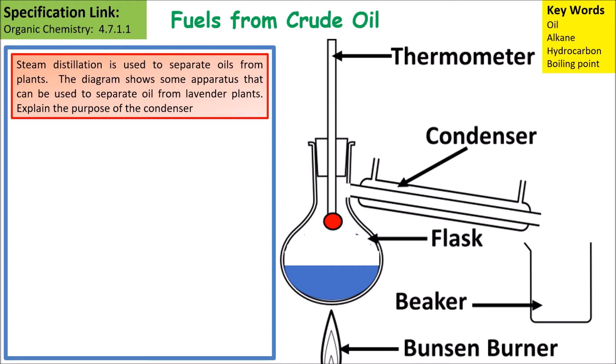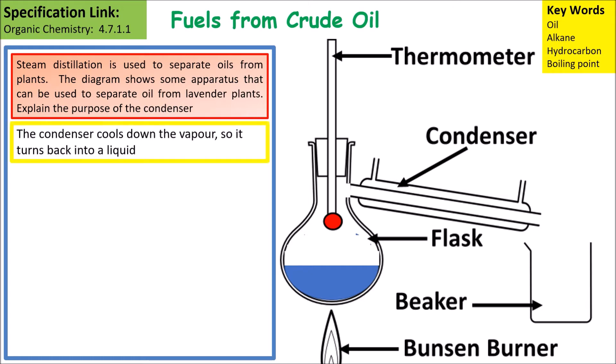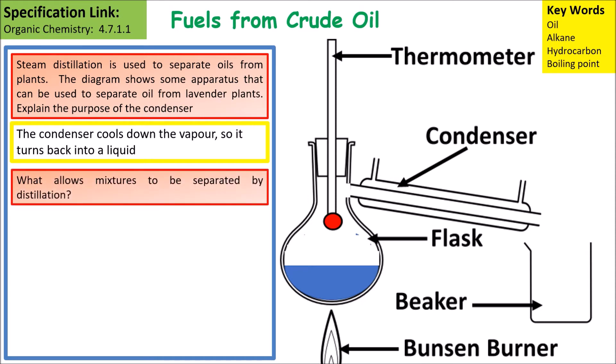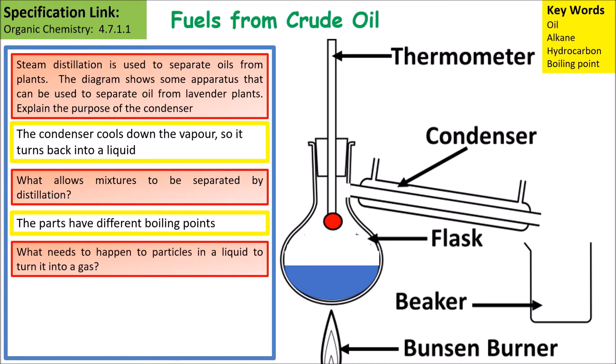The diagram shows some apparatus that could be used to separate oil from lavender plants. Explaining the purpose of the condenser — the condenser is there to cool the vapor down so it turns back into a liquid. What allows the mixtures to be separated is that the two different parts have different boiling points.